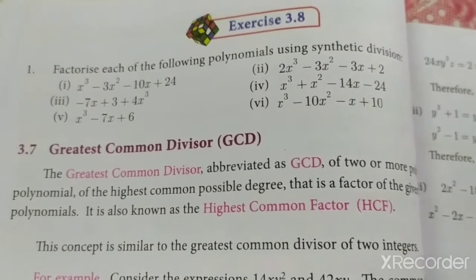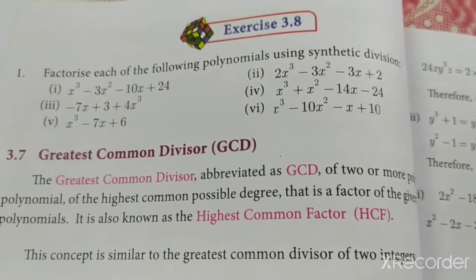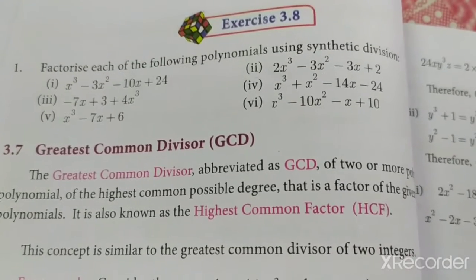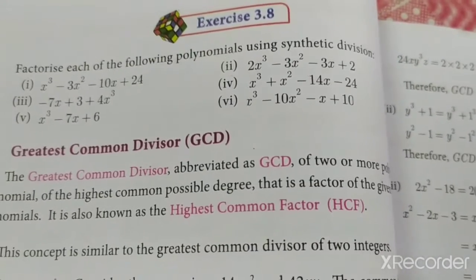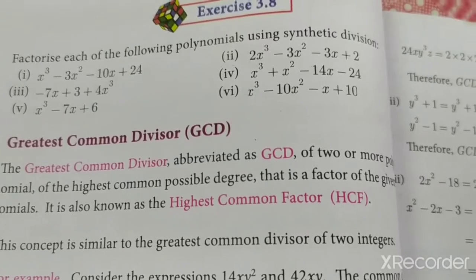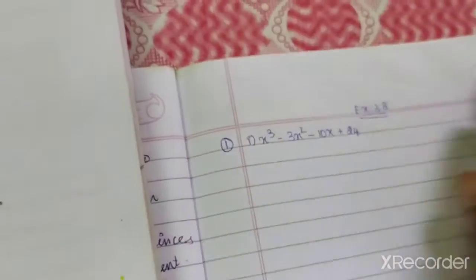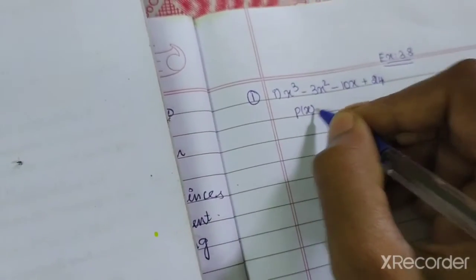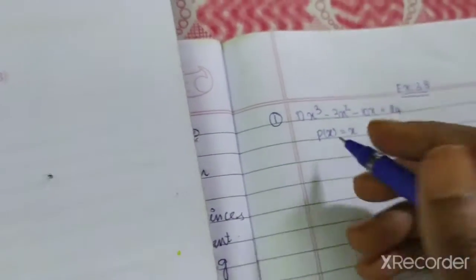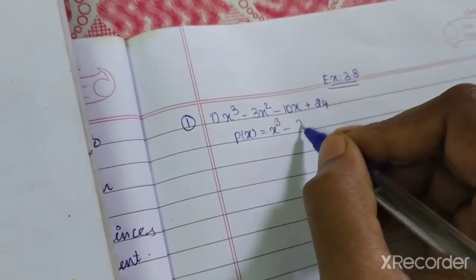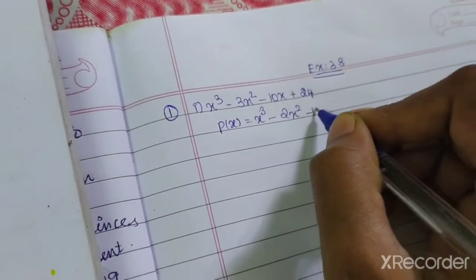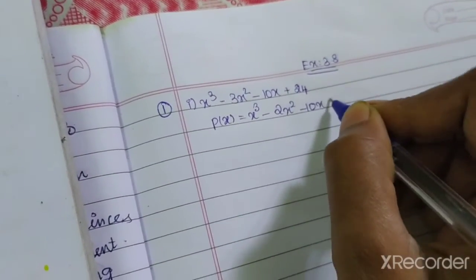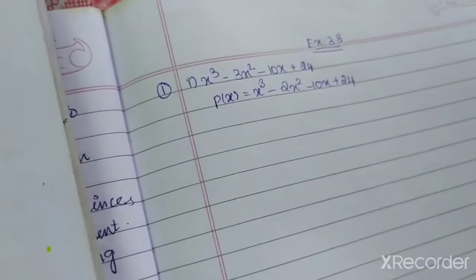So, what we are going to do — the first question: x cubed minus 3x squared minus 10x plus 24. This is our question, and that is your P of x. First of all, we check if it is in standard form. So, x cubed minus 2x squared minus 10x plus 24.